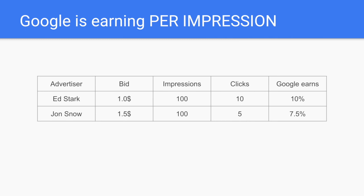Imagine Ed Stark and Jon Snow competing against each other — two advertisers with the same keyword, same ad, same landing page. It never actually happens, but for example purposes it works. Ed Stark is ready to pay one dollar per bid and Jon Snow pays one and a half times more. But Ed Stark's click-through rate is two times higher, which means Ed Stark will give Google $10 per hundred impressions and Jon Snow only $7.50. So no matter that Jon Snow is ready to pay more per click, his lower click-through rate doesn't compensate for Ed Stark's smaller bid. Ed Stark wins the auction, Jon Snow loses.